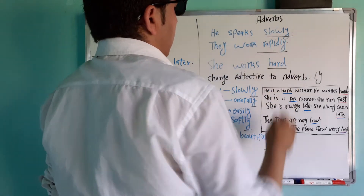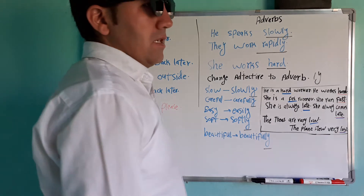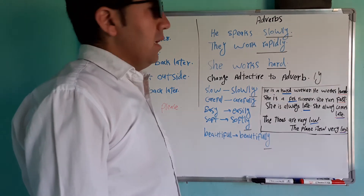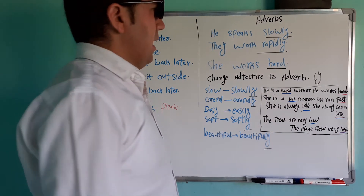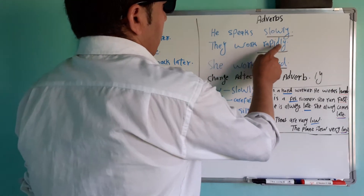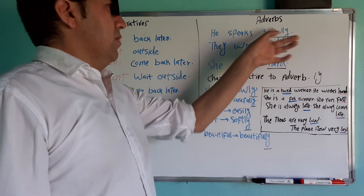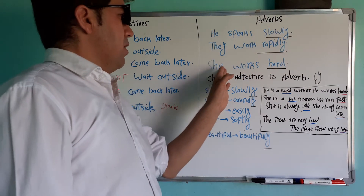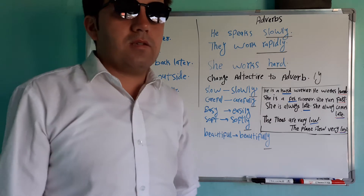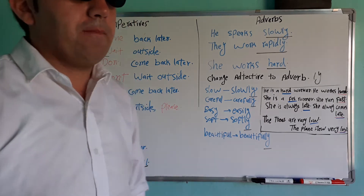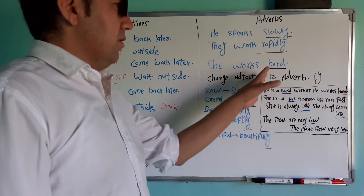He speaks slowly — آیسته صحبت کردن. Slow adjective است، slowly — اگه -ly اضافه شد، adverb می‌شه. They work repeatedly — آنها مکررا کار کردن — این شد adverb. She works hard — این خانم به سختی کار کرد. در باره فعل توضیحات می‌ده.